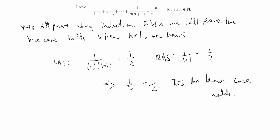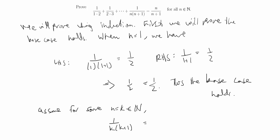Next comes the inductive hypothesis, where we assume the equality holds for some n equals k. We assume for some k in the natural numbers that the equality holds: the sum 1 over k(k+1) equals k over (k+1). We assume that holds true.